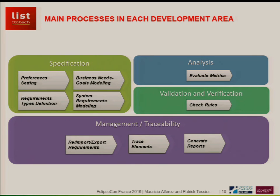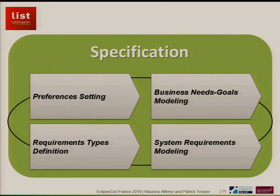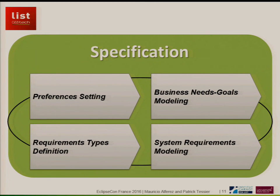We are covering all the areas that define requirements in general: specification, analysis, validation and verification, and a transversal activity called management or traceability. I will start with specification. There is not a specific order of actions or processes to accomplish, but people usually start by creating preferences on how requirements look, the types of requirements, and then there is a top-down decomposition of requirements starting from business to concrete requirements — from the business world to the systems world.